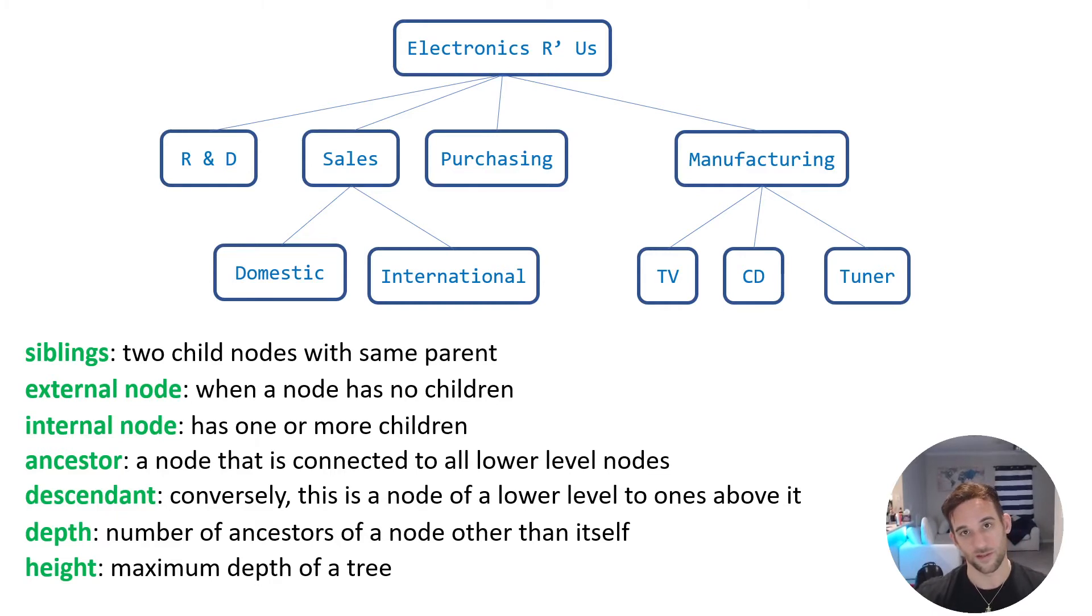Now let's take a look at descendant, which is the converse of that. This is a node of a lower level to ones above it. So if you take a look at sales, its descendants are domestic, international. Manufacturing has three descendants: TV, CD, and tuner. Really the ancestor one we really have to understand because we can make two calculations for trees, and they are we can calculate the depth of a node and the height of the tree.